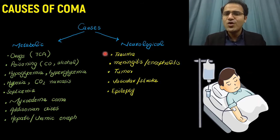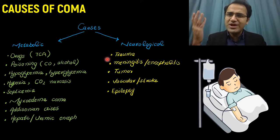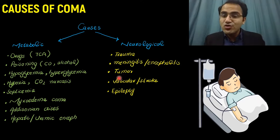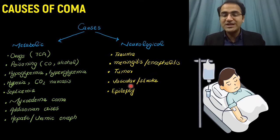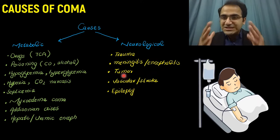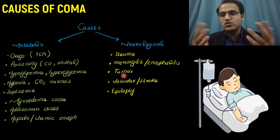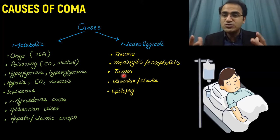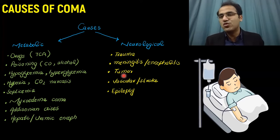In the neurological causes, we have trauma and injury to the brain — any accident can lead to coma. Meningitis, encephalitis — infection of the meninges and the brain. Tumor within the brain. Vascular causes like stroke and hemorrhage in the brain. Epilepsy — excessive electrical activity in the brain. All these metabolic and neurological causes are somehow related to brain injury that leads to coma.